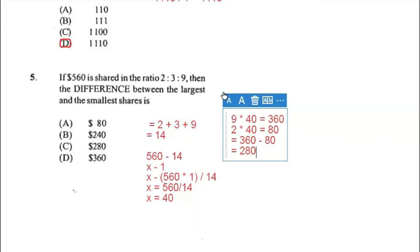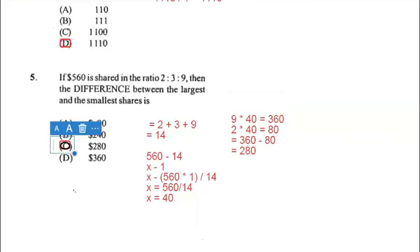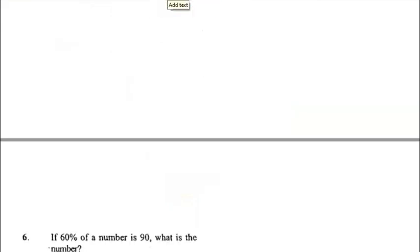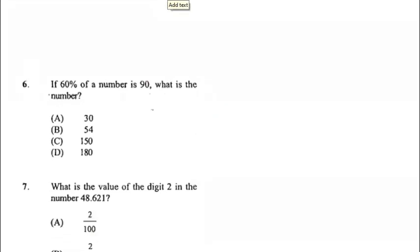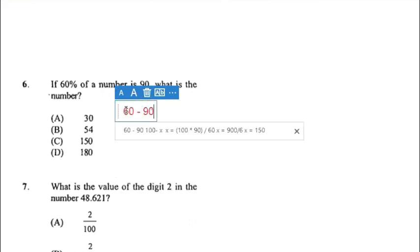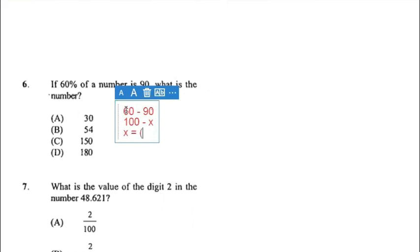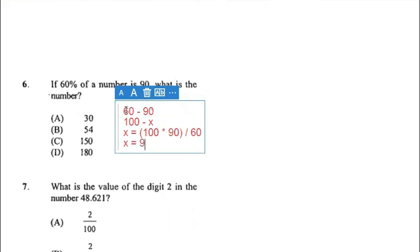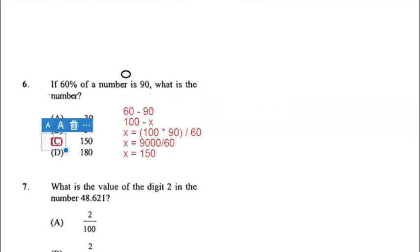Number six: if 60 percent of a number is 90, what is the number? The original number occupies the 100 percent slot. Cross multiply: x equals 100 multiplied by 90, all divided by 60. So x equals 9000 divided by 60, and x equals 150. The answer for six is C.